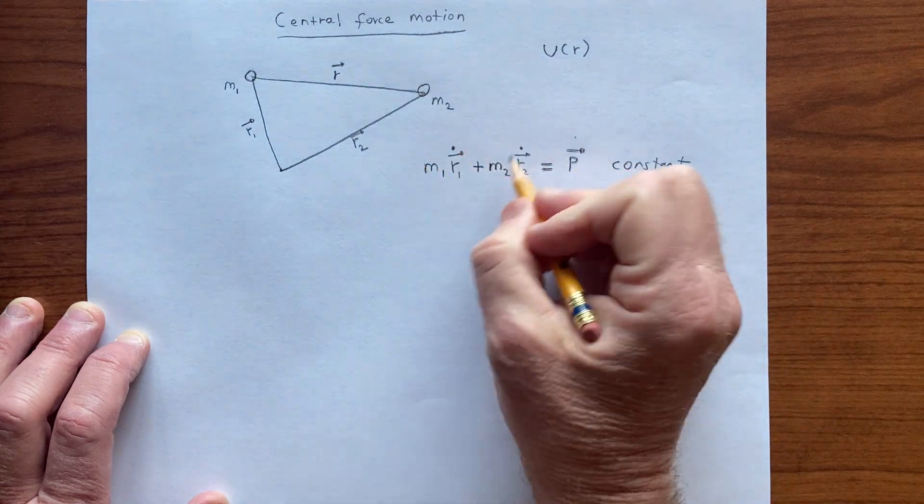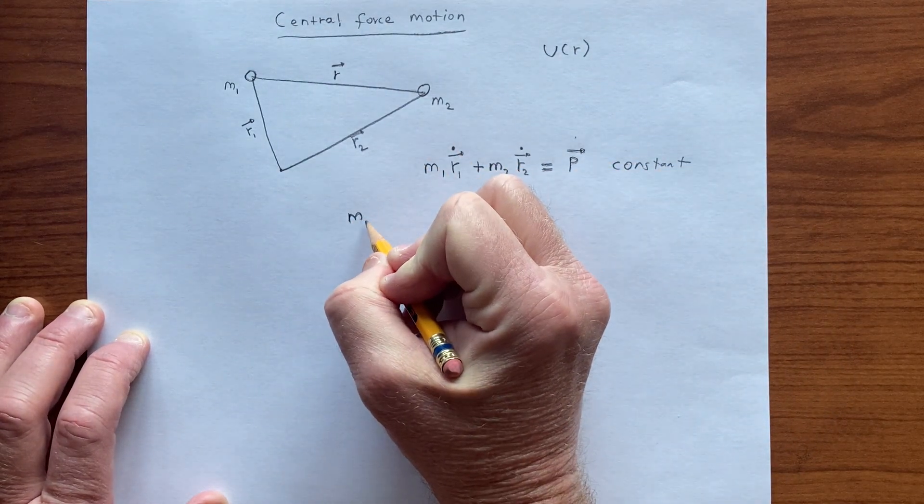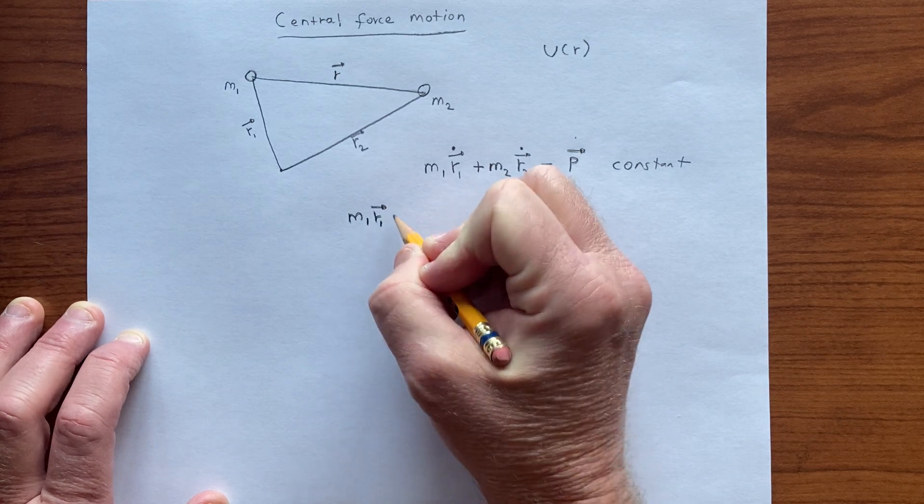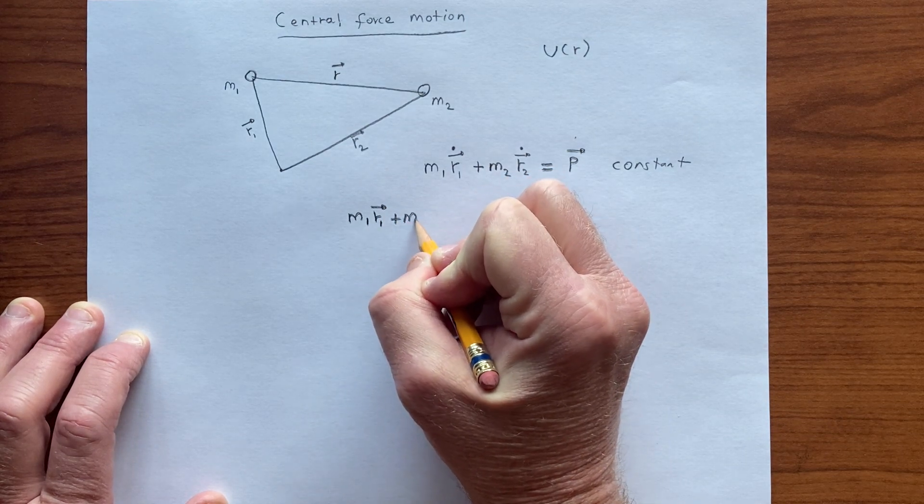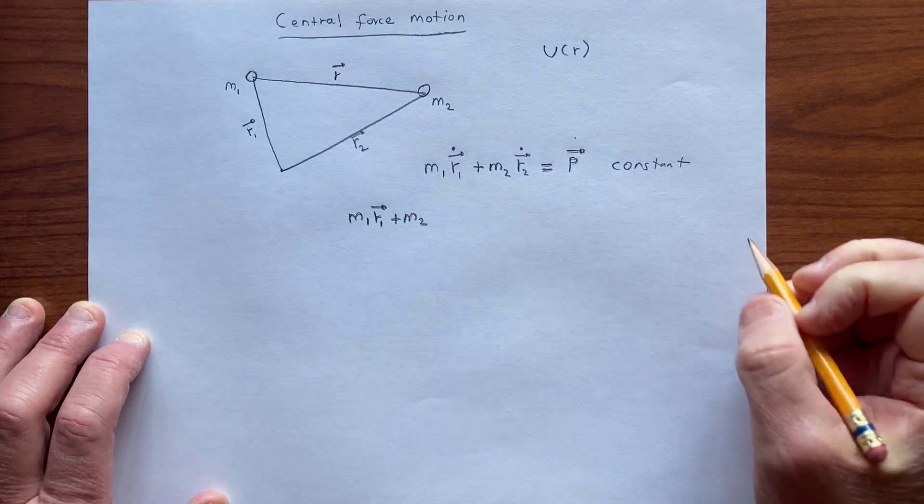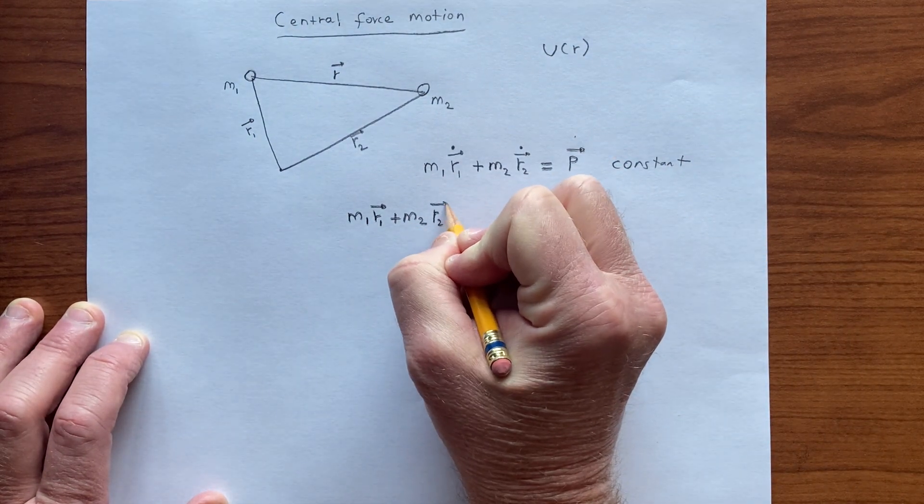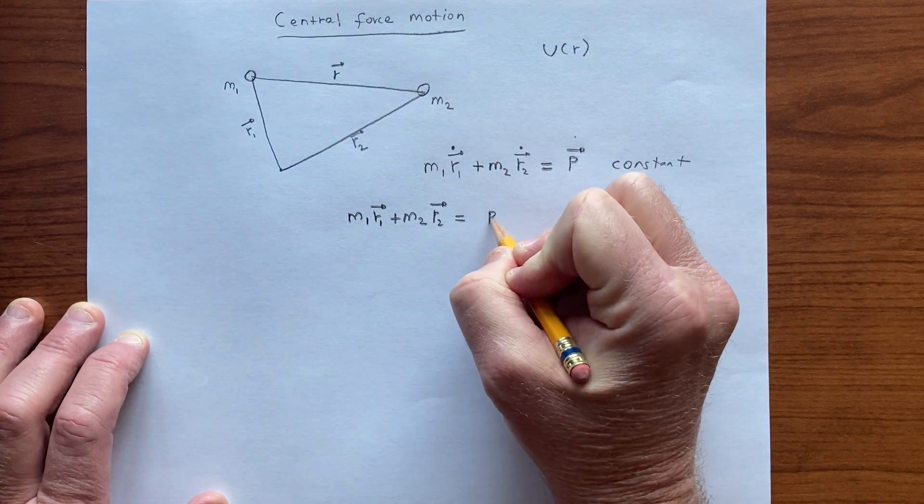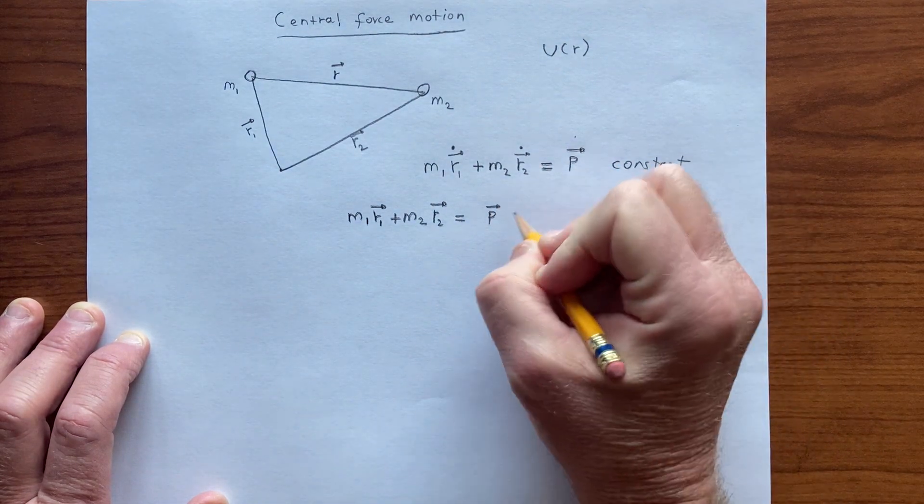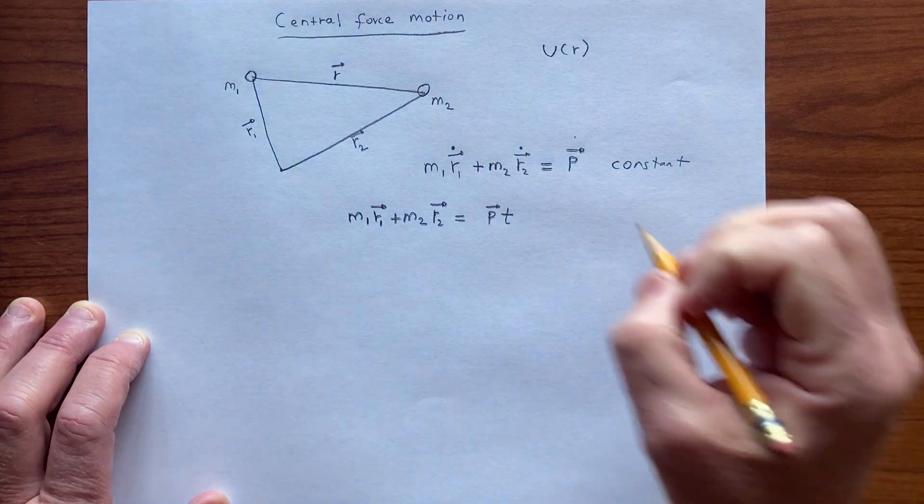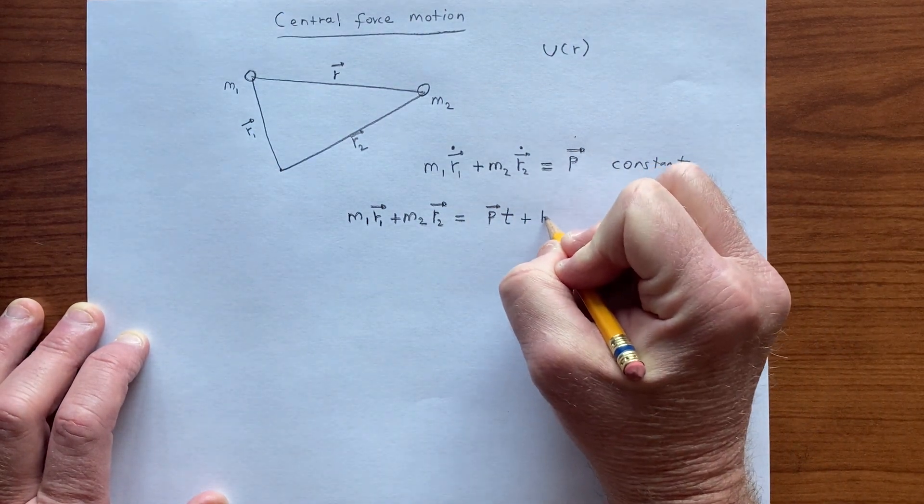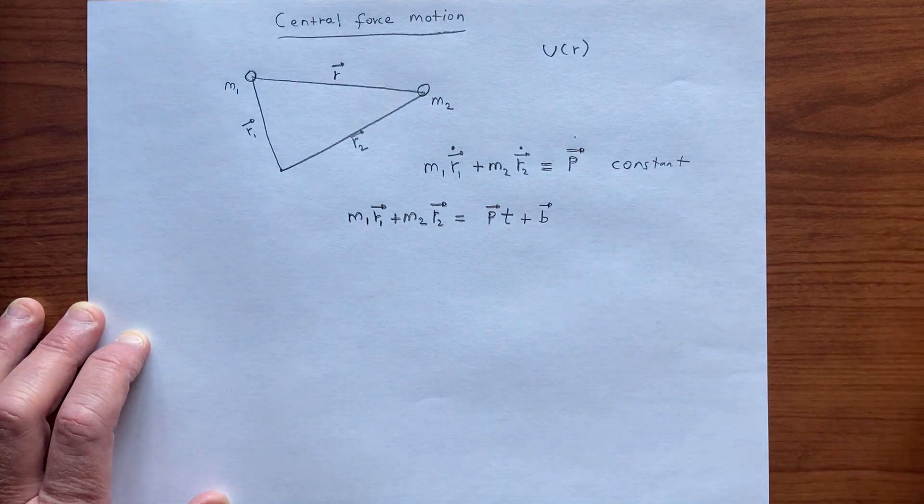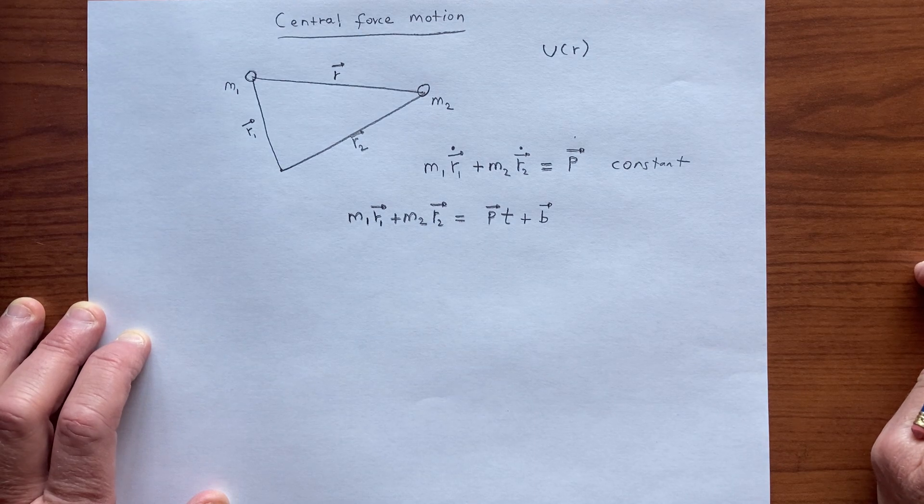So if we integrate this, and m1 is a constant, we get m1 r1 plus m2 times r2. That is equal to this constant integrated in time, which gives us p vector times t plus some other constant, but it's a vector equation where b is just some constant. In other words, it's a vector that doesn't depend on time.